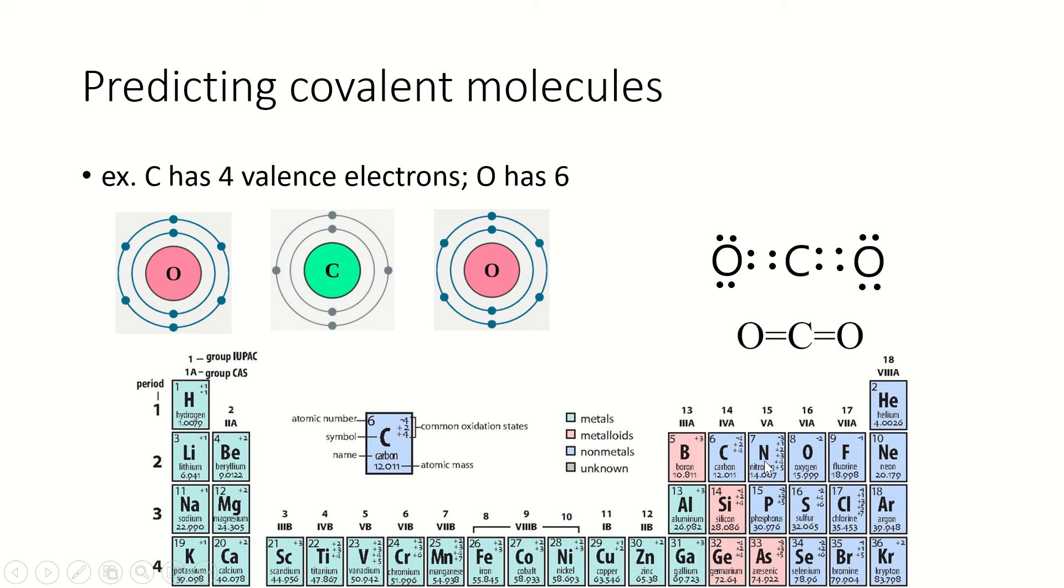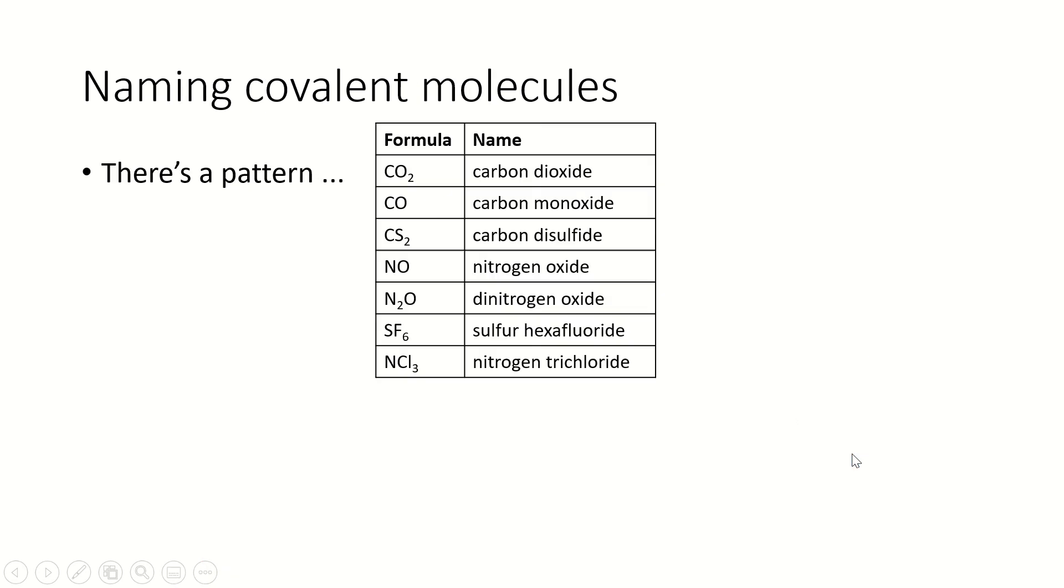So if you look here, nitrogen, if carbon has four valence electrons and oxygen has six, the nitrogen is going to have five, right? So nitrogen happily makes three bonds. Oxygen makes two bonds. Fluorine, one. All right. So how do we name them?